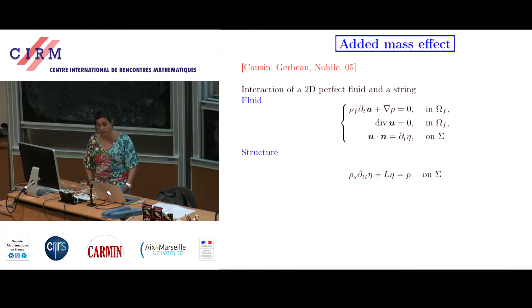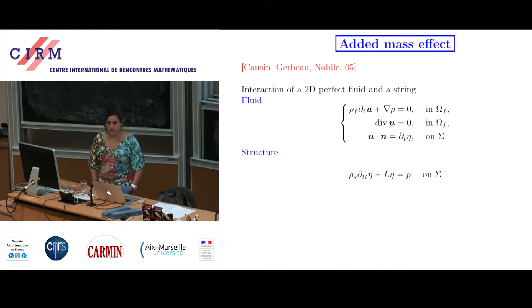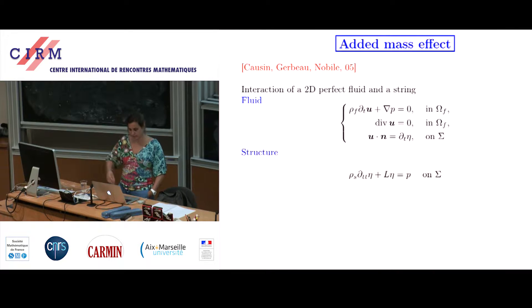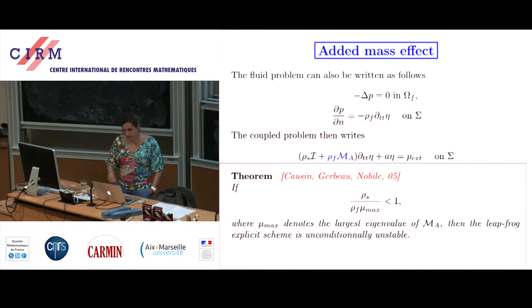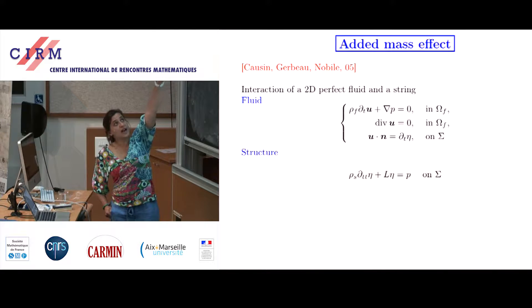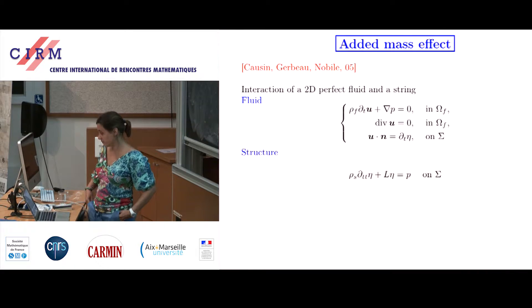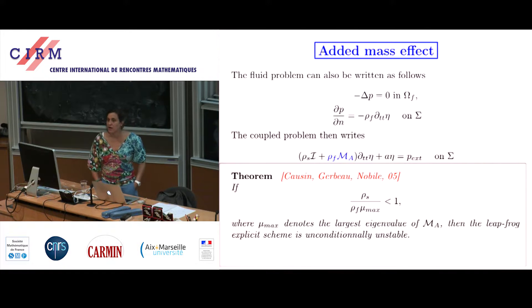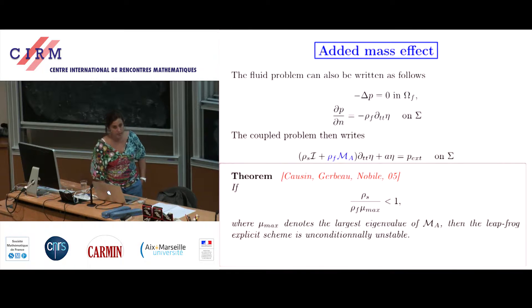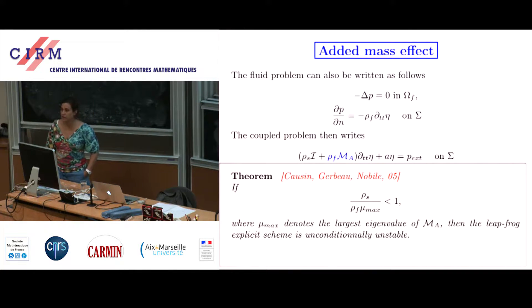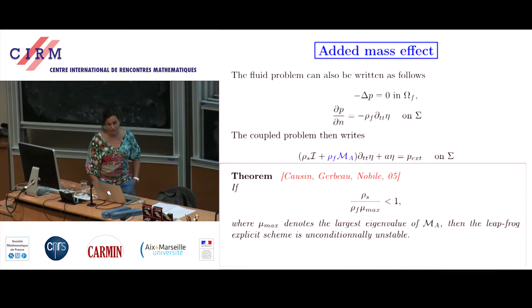Take a perfect 2D fluid in a fixed domain coupled to a wave equation on one part of the boundary. Apply the divergence of the first equation, and then take the normal component of the first equation, and you end up with an equation on the pressure. It solves the Laplace equation with a Neumann boundary condition depending on the acceleration of the structure and on the mass of the fluid.